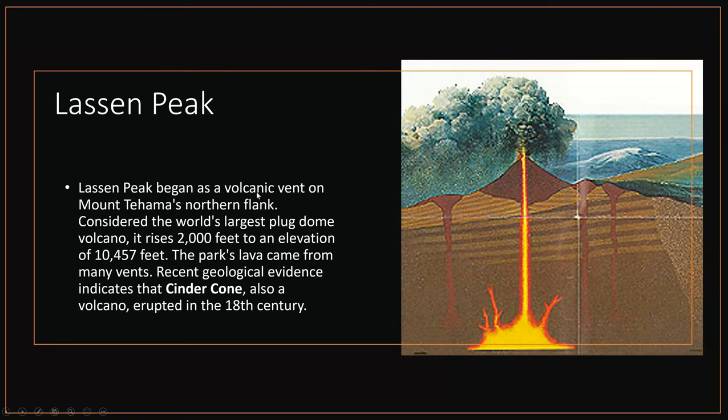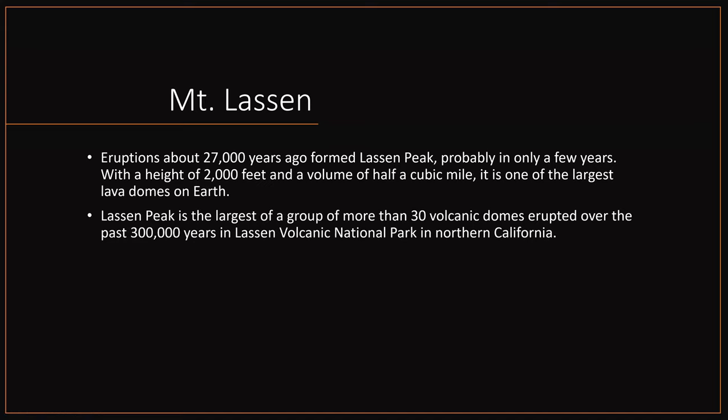Lassen Peak began as a volcanic vent on Mount Tehama's northern flank. It is considered the world's largest plug dome volcano, rising 2,000 feet to an elevation of 10,457 feet. The park's lava came from many vents. Eruptions of about 27,000 years ago formed Lassen Peak, probably in only a few years, with a volume of half a cubic mile — making it one of the largest lava domes on Earth. Lassen Peak is the largest of a group of more than 30 volcanic domes erupted over the past 300,000 years in Lassen Volcanic National Park.